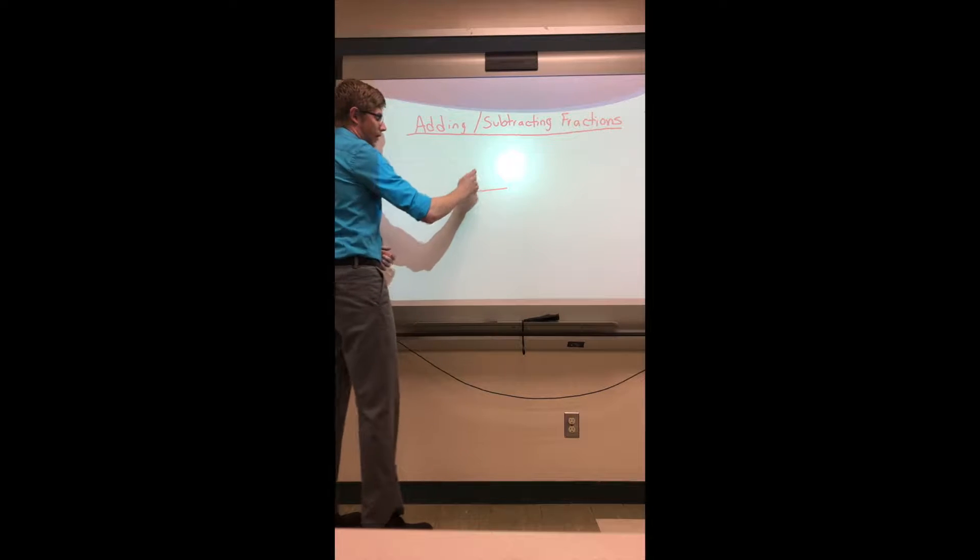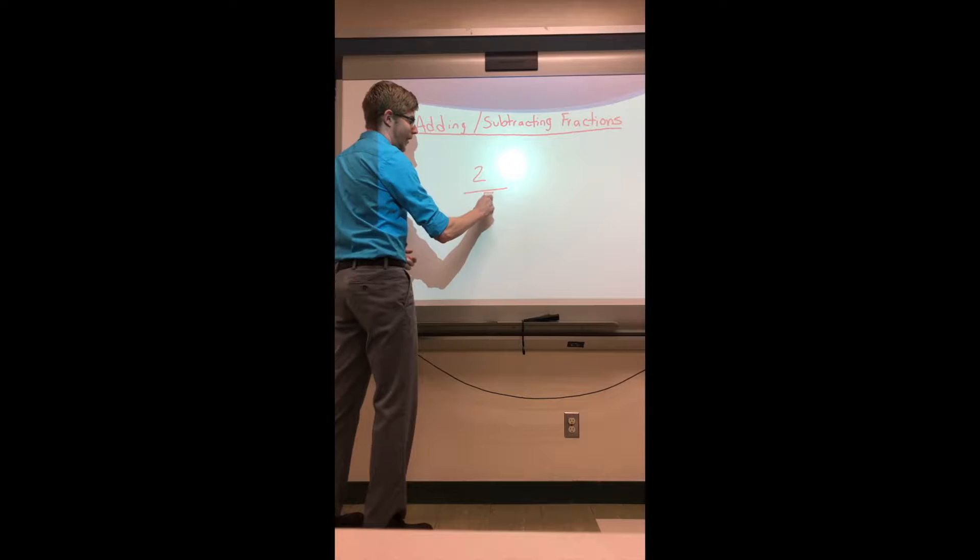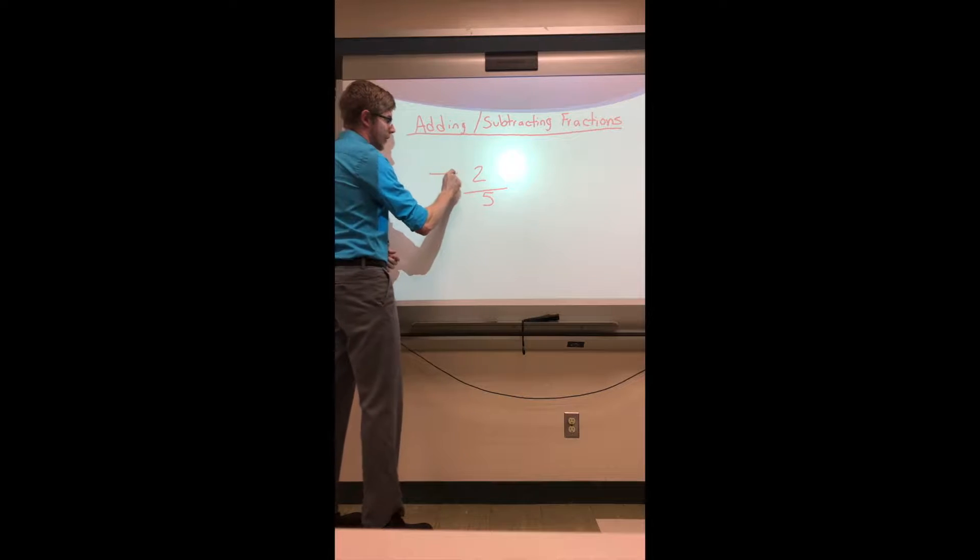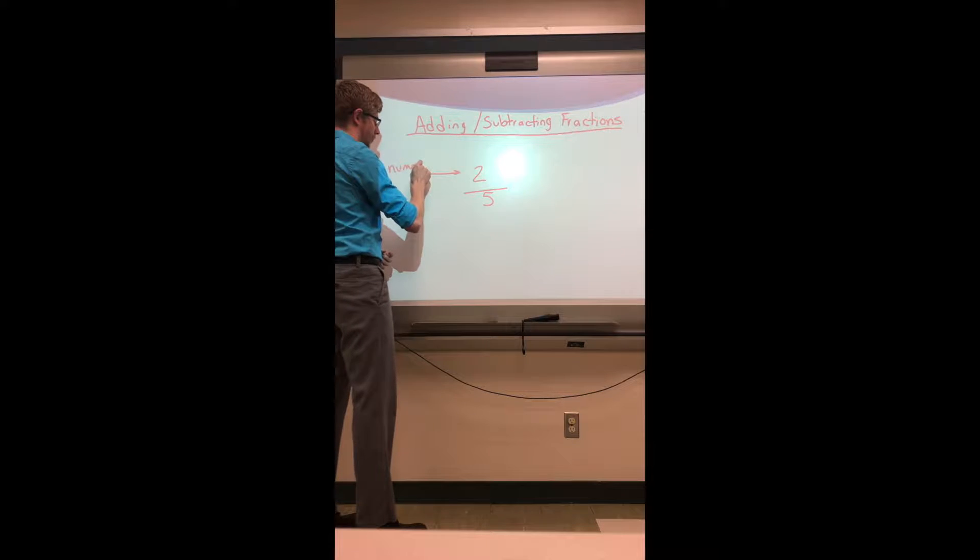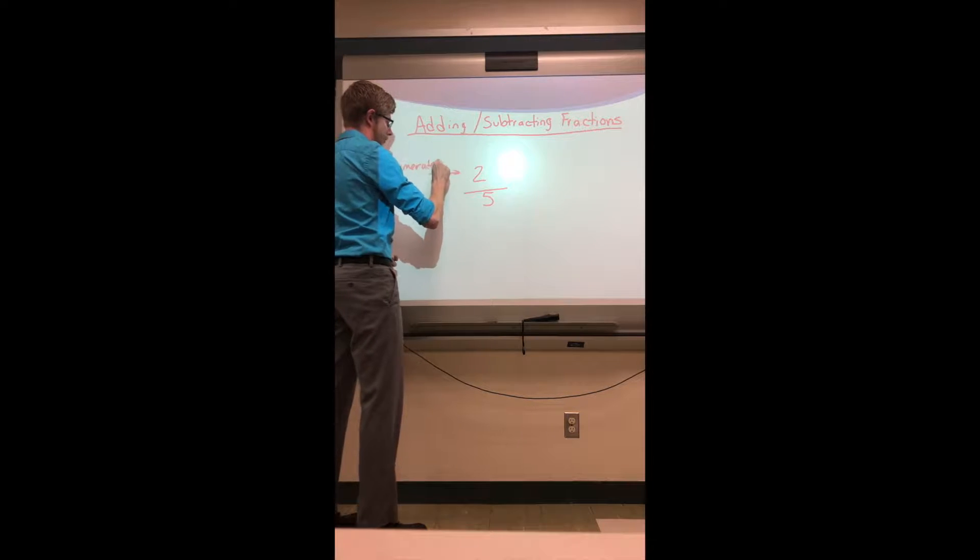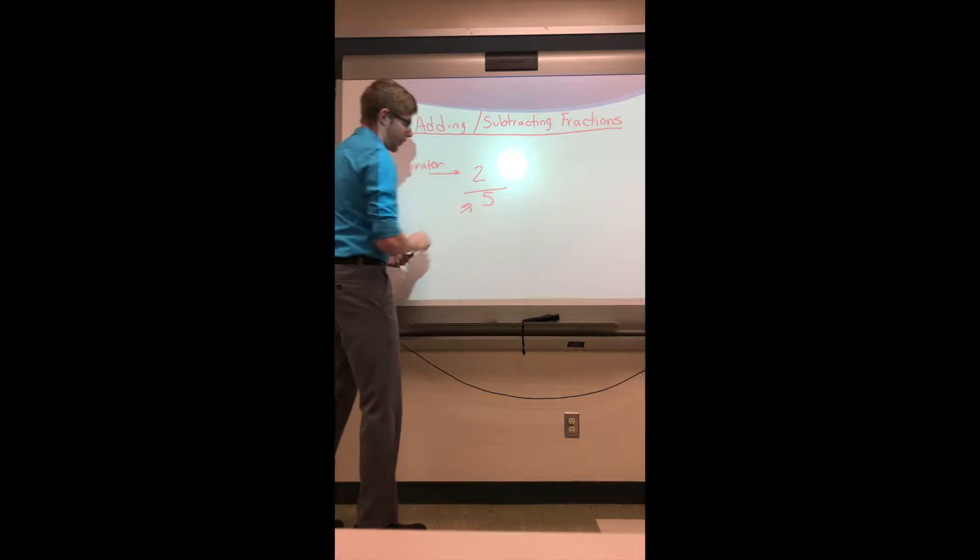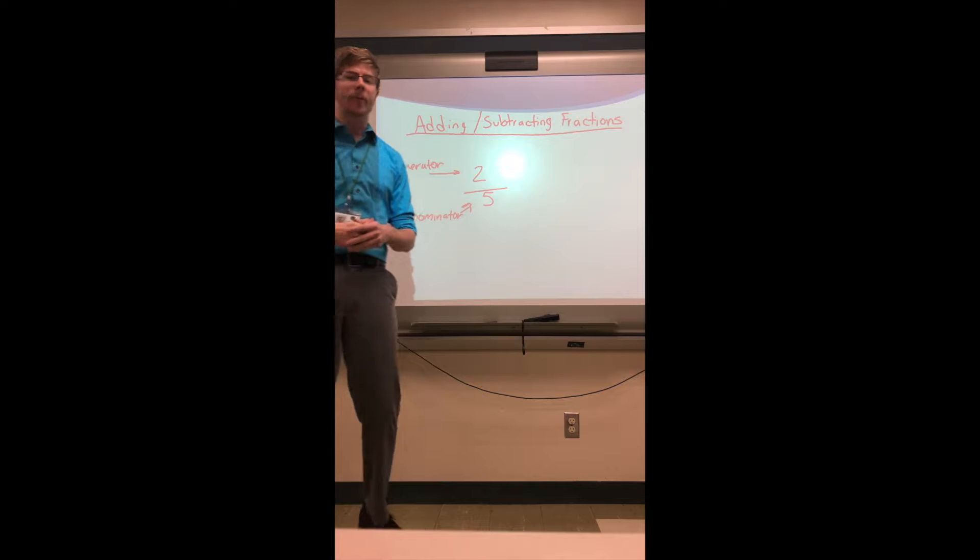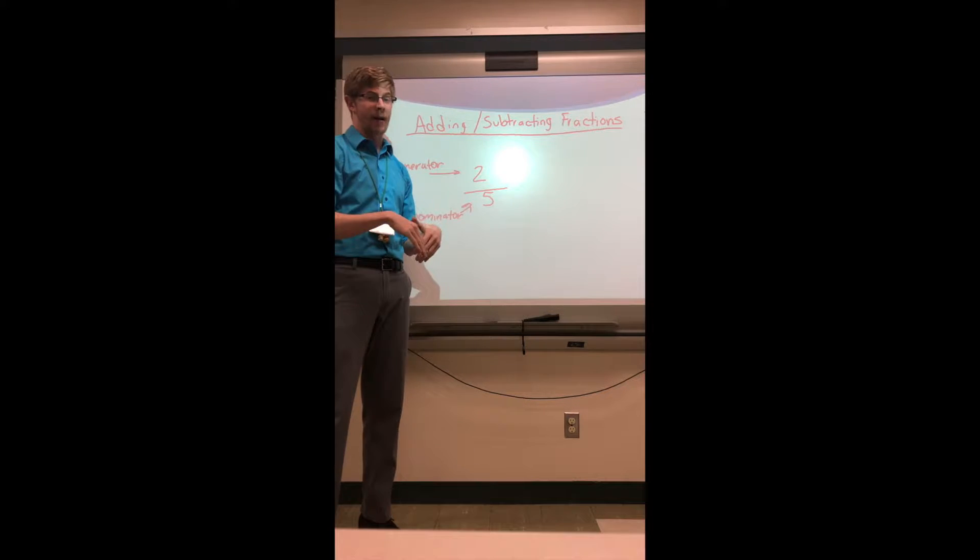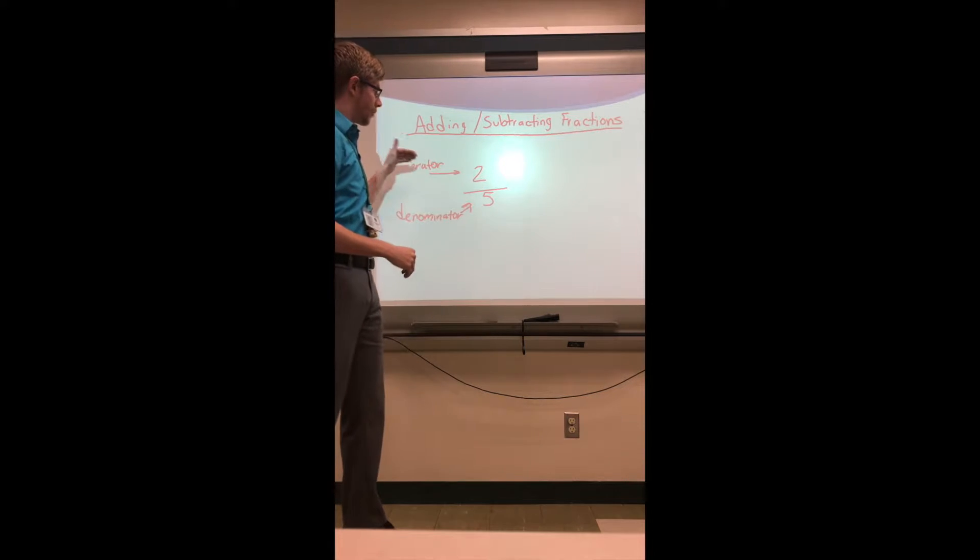Whenever we're looking at a fraction, let's say we have a fraction like two-fifths, the top number here is called our numerator. The number down at the bottom is the denominator. The way that I help students to remember this is the denominator is down at the bottom, so numerator then by process of elimination would be the top number.